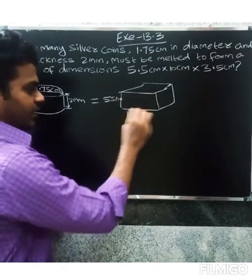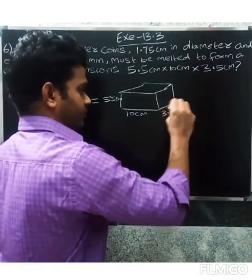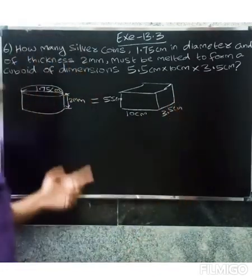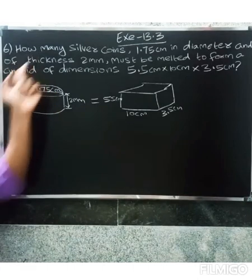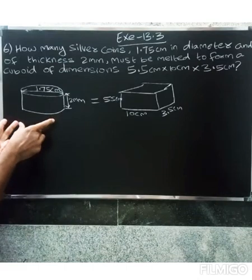We need to find how many silver coins make the cuboid. The total volume of silver coins must equal the volume of the cuboid.